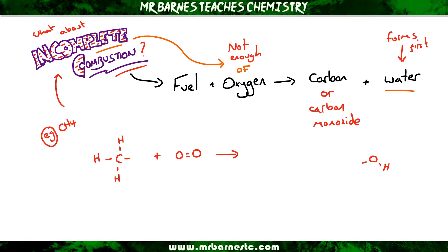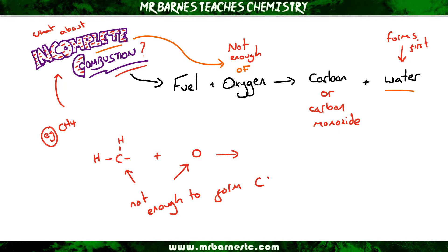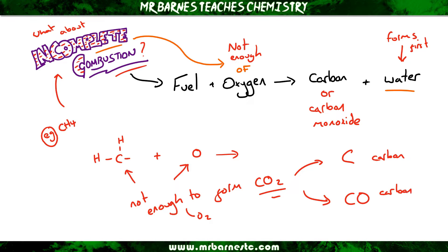If I remove two hydrogens and one oxygen from the left-hand side, what am I left with? Two hydrogens, one carbon, and one oxygen. Straight away you can see there's not enough oxygen to form CO2. So I can only form two things: I could make carbon and then H2O, or I could make carbon monoxide, CO.